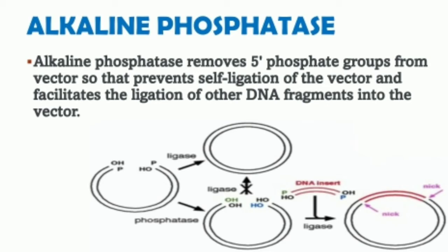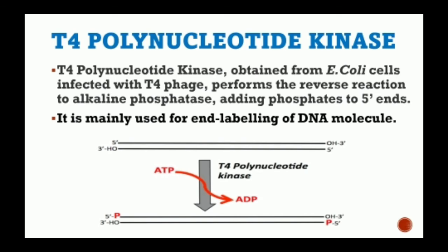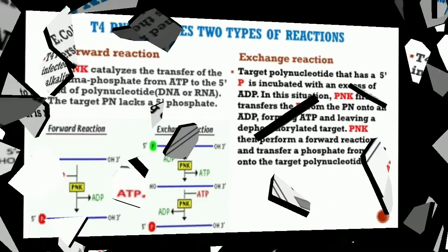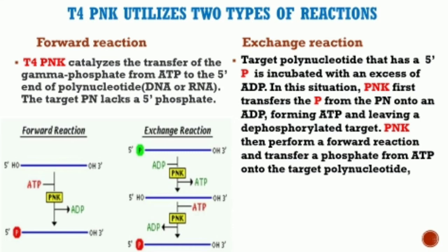Another type of end modification enzyme is T4 polynucleotide kinase, obtained from E. coli cells that are infected with T4 phage. It performs the reverse reaction to alkaline phosphatase, as it phosphorylates DNA ends by adding a phosphate group to the 5' end. It is mainly used for end labeling of DNA molecules.